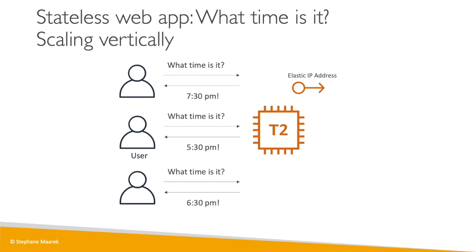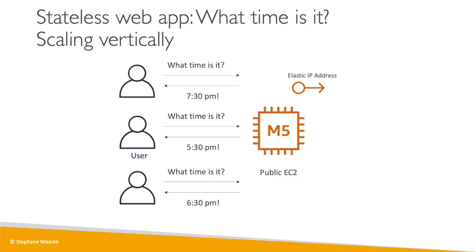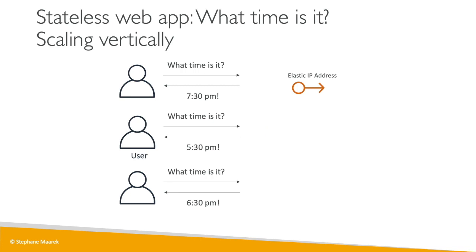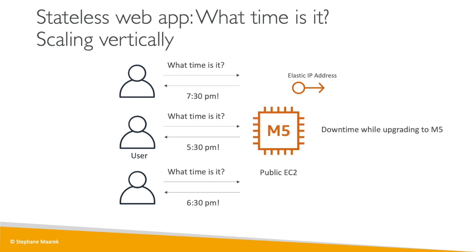As a solution architect, we say: maybe we should replace that T2 Micro instance with something bigger to handle the load — that's called vertical scaling. We'll make it an M5 Large. So we stop the instance, change the instance type, and start it again. Because it has an elastic IP address, people are still able to access our application, but we experienced downtime while upgrading to an M5.